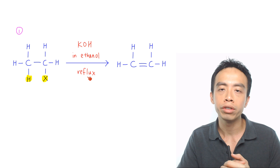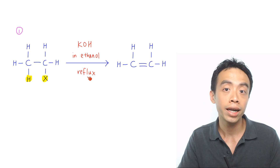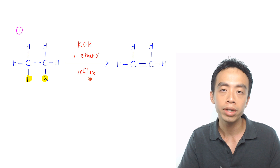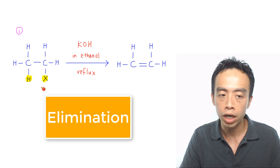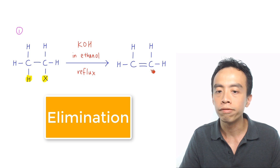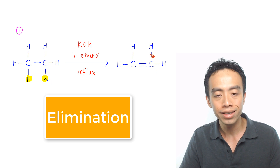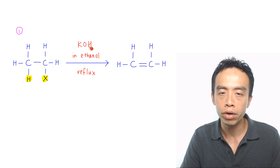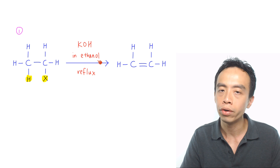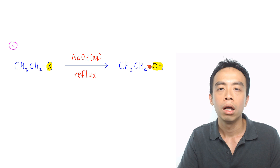Now the first must-know reaction of alkyl halides, or halogenoalkane, is the elimination of HX to form our alkene, and this is done using KOH in ethanol reflux.